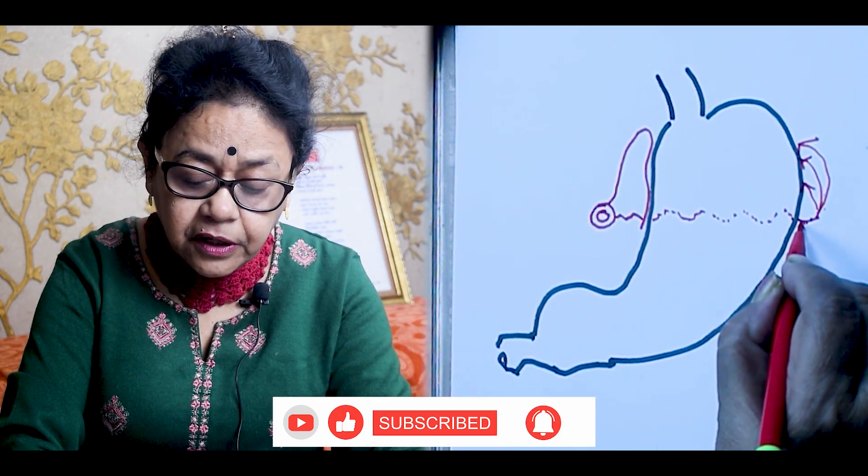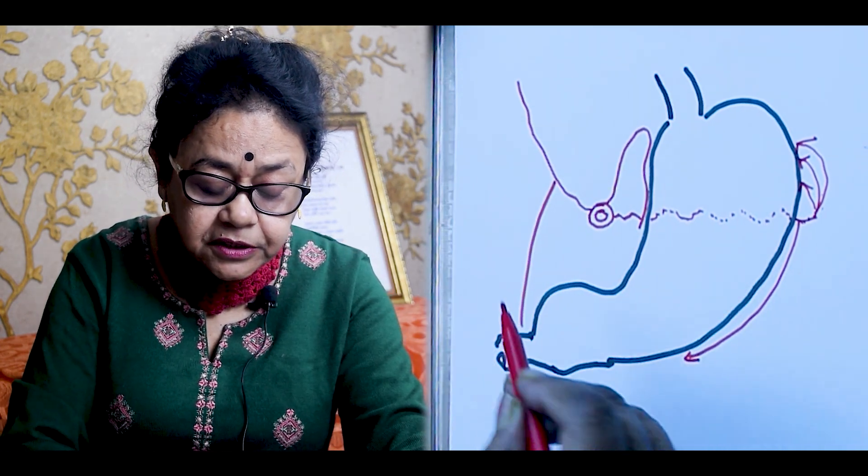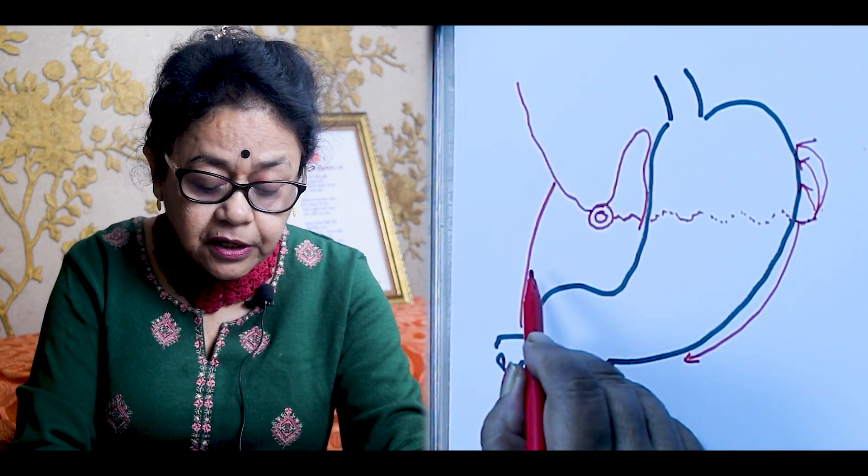From here also, the left gastroepiploic artery arises along the greater curvature. Now from the celiac trunk, another artery arises known as the common hepatic artery. It gives branches to the liver, and from the beginning it gives one branch known as the gastroduodenal artery.